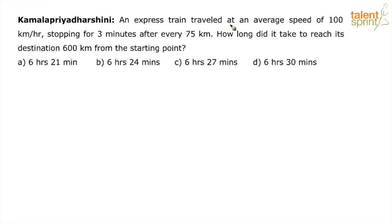An express train travelled at an average speed of 100 km per hour, stopping for 3 minutes after every 75 km. How long did it take to reach its destination 600 km from the starting point?